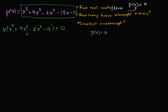Now there's something else that might have jumped out: we had two third degree terms, and after we factored out an x, now we have two second degree terms. It might be tempting to just add these two together, but instead we might take this as a clue that maybe we can factor by grouping — where you split up that middle degree term and see if you can reverse the distributive property twice.